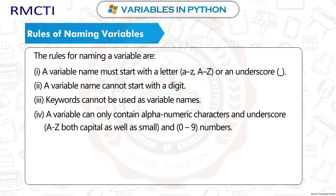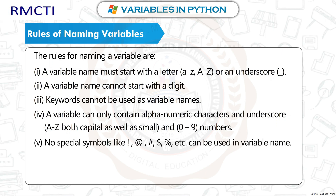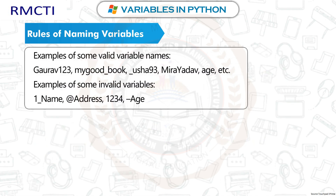(5) No special symbols like !, @, #, $, %, etc. can be used in a variable name. (6) Variable names are case sensitive. Examples of valid variable names: Gaurav123, Mygood_book, _usha93, MeeraYadav, age, etc. Examples of invalid variable names: _name starting with number, @address, 1234, hyphen-age, etc.